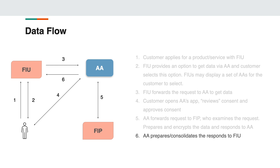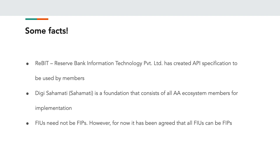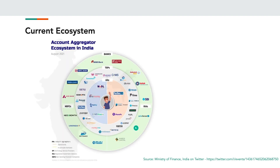So this is the typical data flow. There is a separate agreement maintained between the individual and the account aggregator, which maintains the consent requests that the individual may have provided or revoked with various banks. Some interesting information: there is an entity called REBIT (Reserve Bank Information Technology Ltd.) that has created an API specification which all partners in the account aggregator ecosystem will use. There is also a separate foundation called Sahamati, which contains all account aggregator ecosystem members and takes care of a smoother and faster implementation of the entire account aggregator process. The diagram shows account aggregators in the center and the onboarded banks in the outer circle.